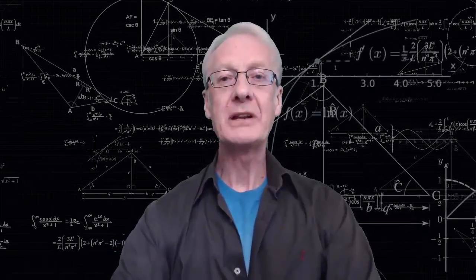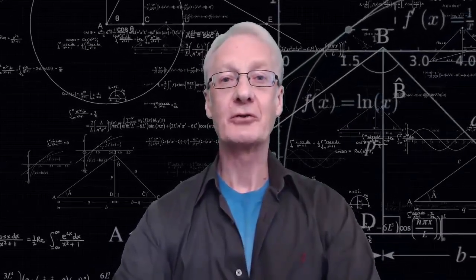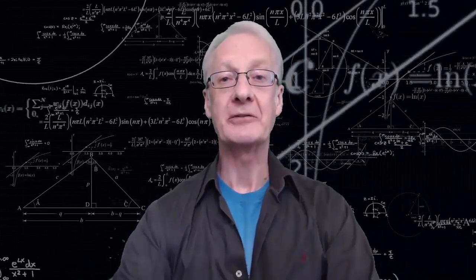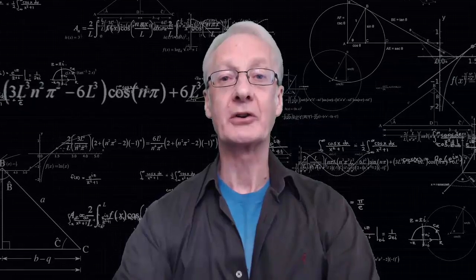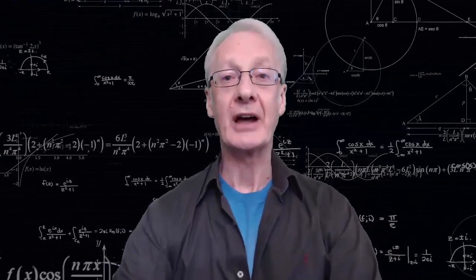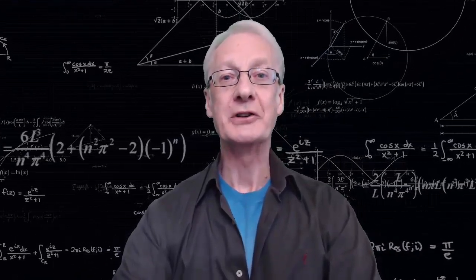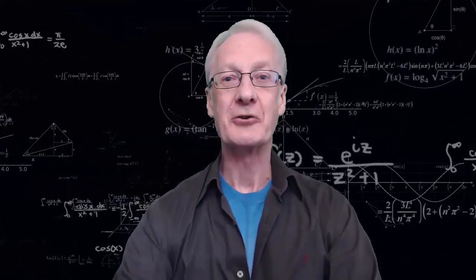Hi everybody. You probably know that the multiplication of natural numbers satisfies the commutative property. In other words, the order of the factors doesn't alter the product. But do you know how to prove that? That's exactly what we're going to do in this video. Let's go.